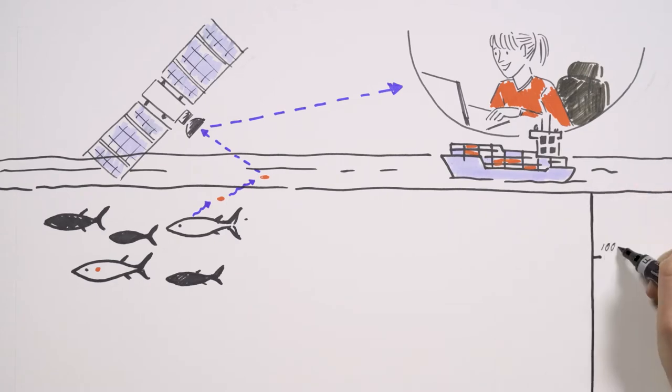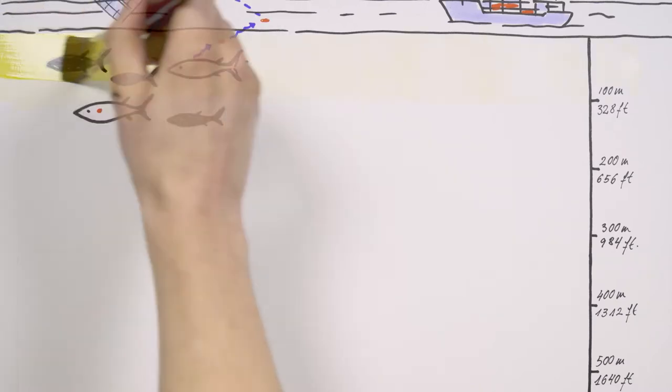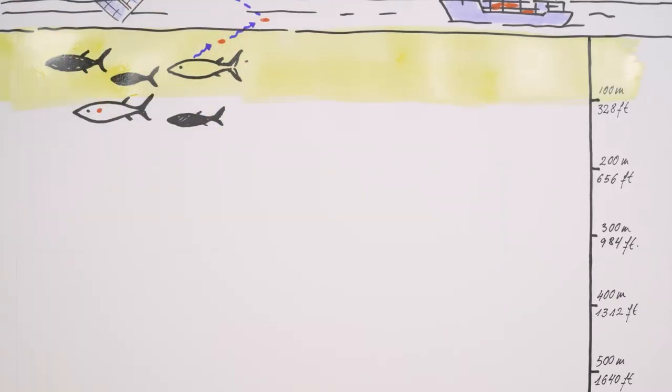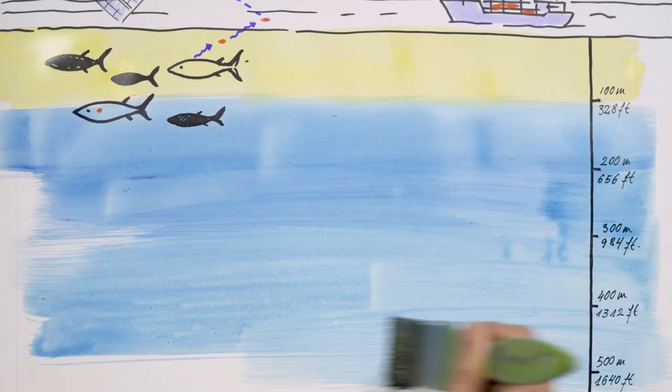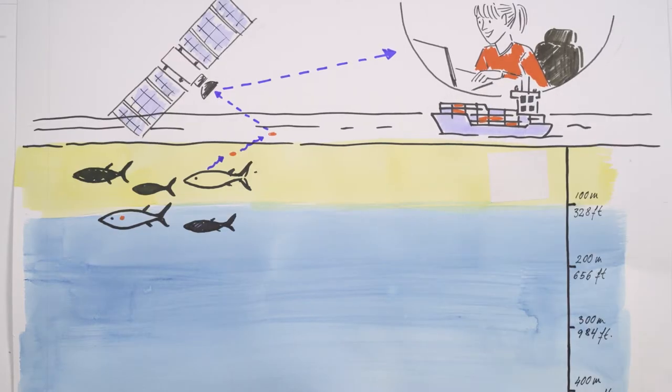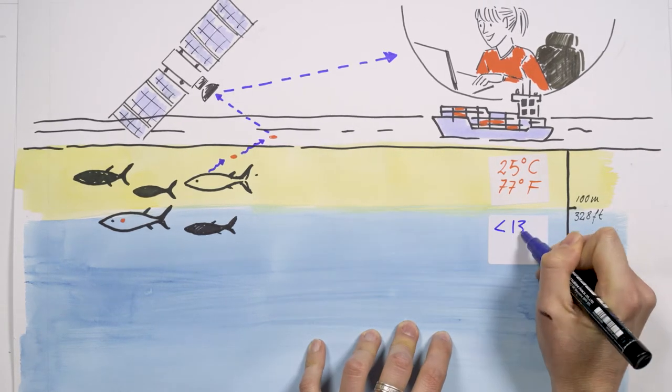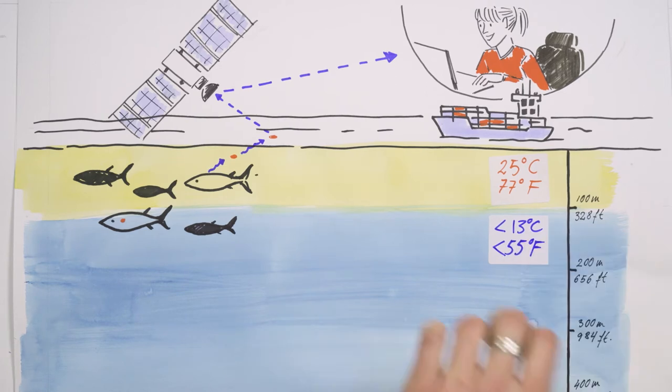To help you picture some of these discoveries, let's imagine a water column that goes from the surface of the sea way down to deep waters. As you can see, there's more light near the surface and the water's warmer. In deep water, where the sunlight doesn't reach, it gets cold and dark. On a summer day in the Atlantic, the surface waters can be around 25 degrees Celsius, and at around 100 meters down, it's below 13 degrees Celsius.